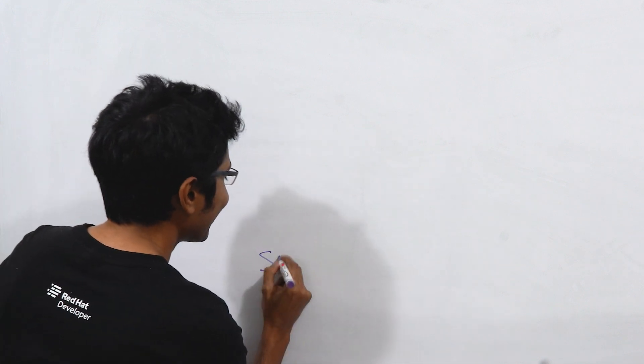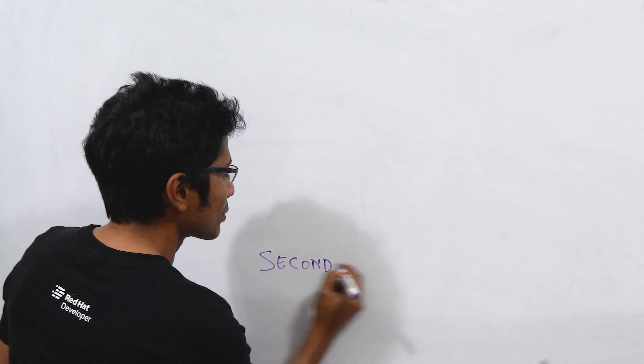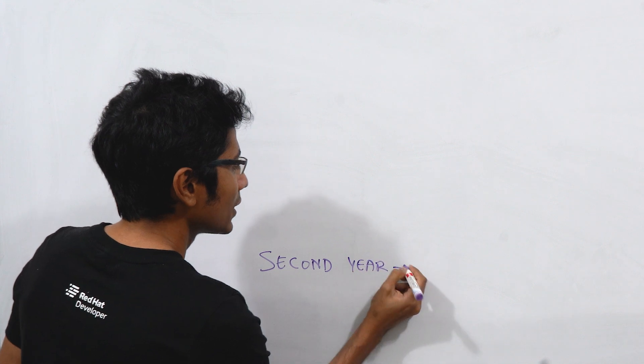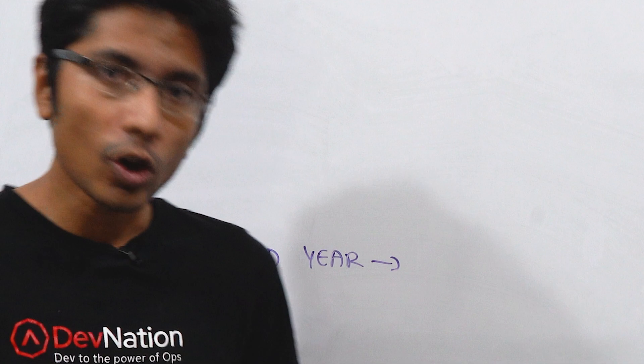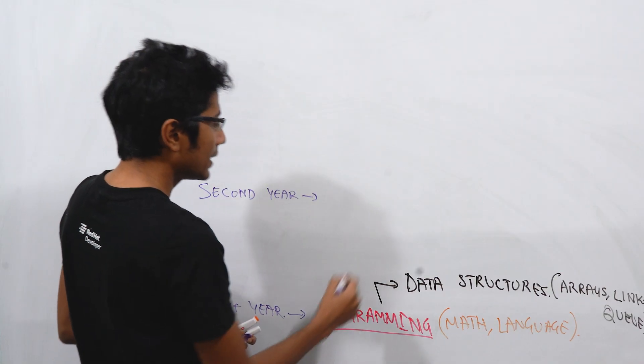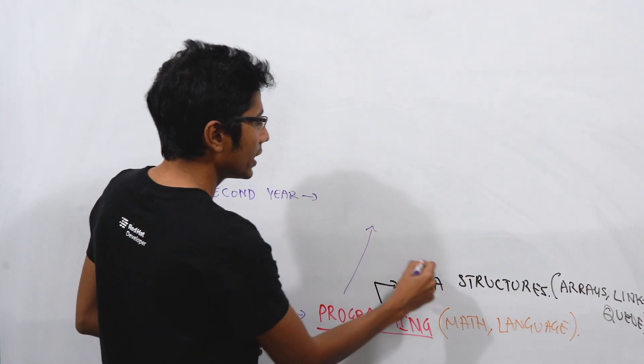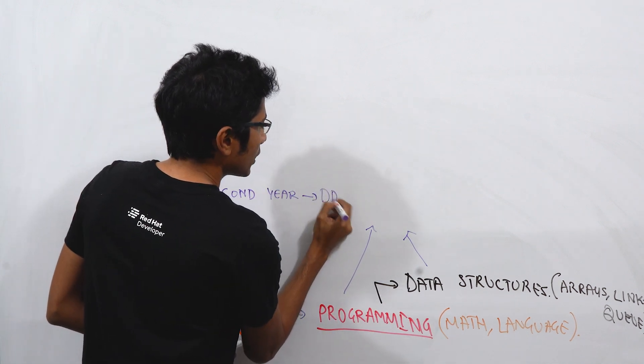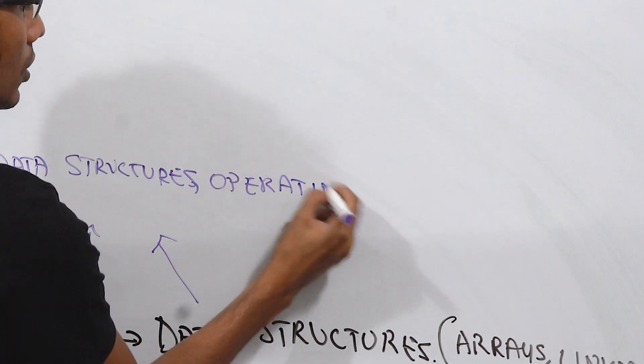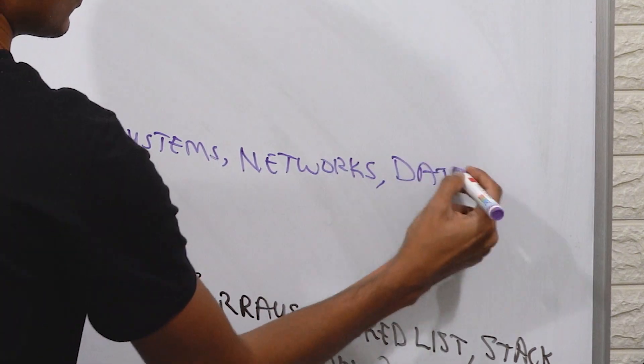First year is going to be pretty tough. You're going to find it probably difficult to pass the exams because you have such a varied syllabus. But in your second year, you go for specialization where things get tougher, but also more fun. At this point, your basics will really help you boost to the next level. And what you should focus on here is data structures, operating systems, networks, and databases.